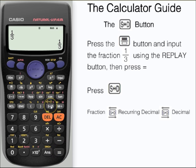Then use the S⇔D button. This time we have 0.3 with a little dot on the top. This indicates that is 0.3 recurring.